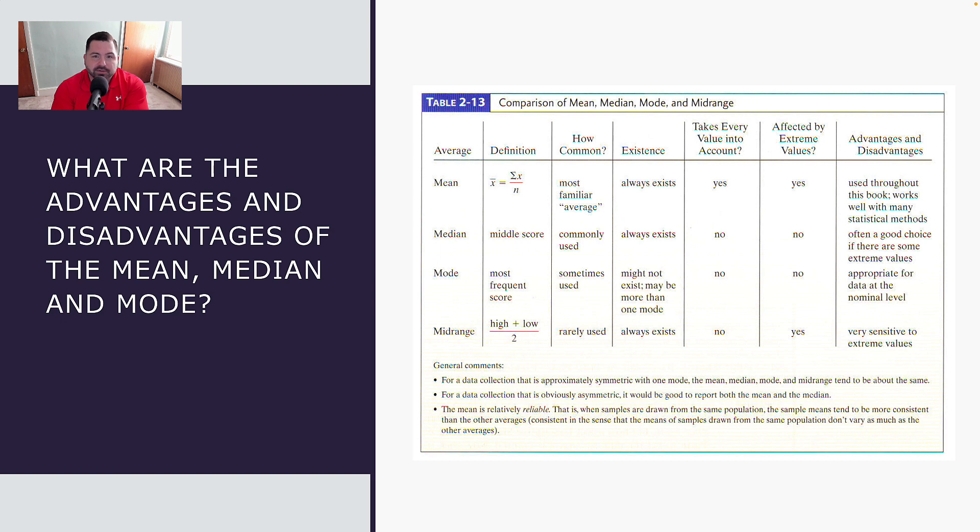So means, medians and modes are things that you all knew how to do before coming into this course. But what's helpful to take it to the next step in health sciences statistics is what are the advantages and the disadvantages of using the mean, the median, and the mode?